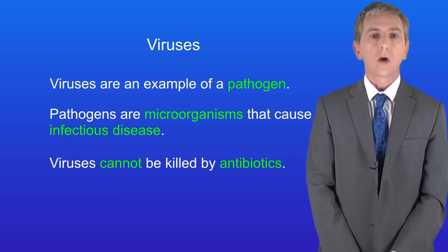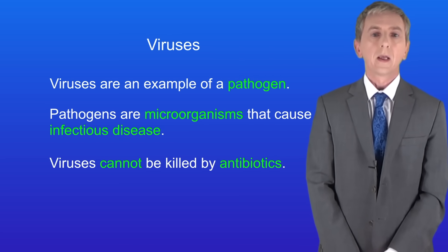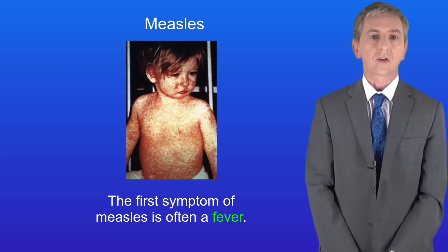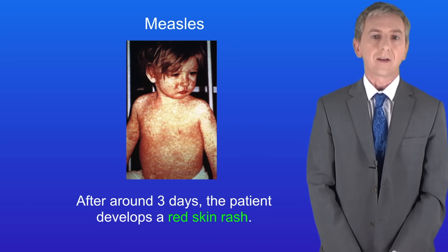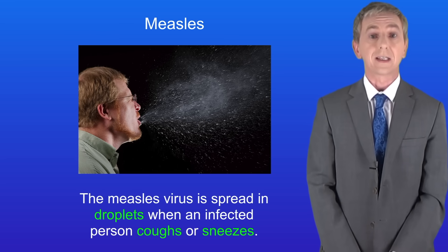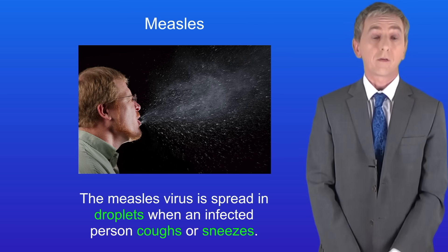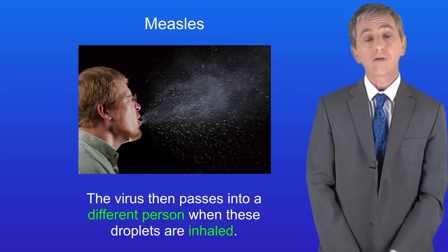In this video we're going to be exploring two specific viral diseases: measles and HIV. We're going to start with measles. Measles is a highly infectious disease and the first symptom is often a fever — in other words a very high temperature. Usually after around three days the patient develops a red skin rash. The virus is spread in droplets when an infected person coughs or sneezes, and passes into a different person when these droplets are inhaled — in other words breathed in.